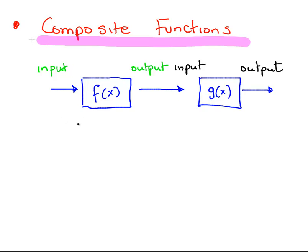So the input here becomes the output here, but the output here is the input into the second function g of x. So that's really the gist of it.